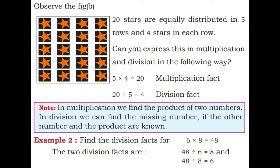20 stars are equally distributed in 5 rows and 4 stars in each row. Can you express this in multiplication and division in the following way? 5 into 4 is equal to 20 in multiplication fact. 20 divided by 5 is equal to 4 is division fact.